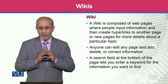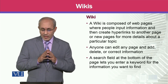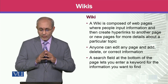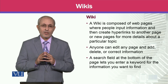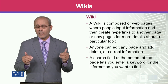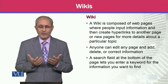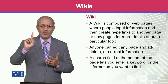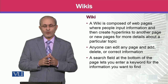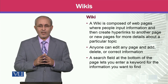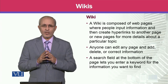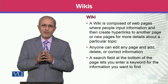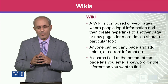A wiki is composed of web pages where people input information and then create hyperlinks to another page, or create new pages for more details about a particular topic. Pages are connected to each other using hyperlinks. آپ نے اکثر دیکھا ہوگا کہ ایک hyperlink نیلے رنگ کی شکل میں نظر آتا ہے، اور اس پر کلک کریں تو ایک پیج سے دوسرے پیج پہ چلے جاتے ہیں۔ Wikis میں بھی hyperlinks اسی طرح سے استعمال ہوتی ہیں۔